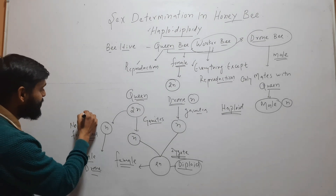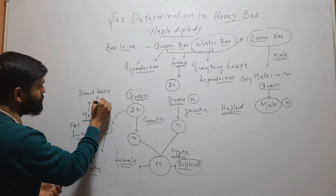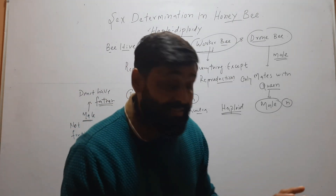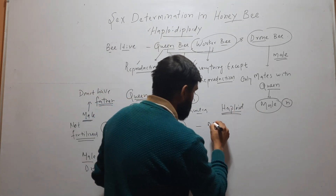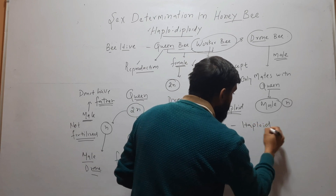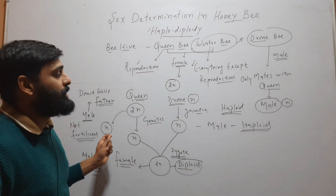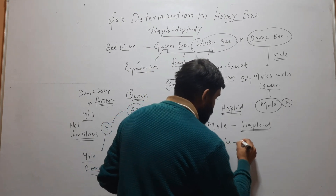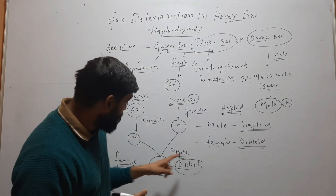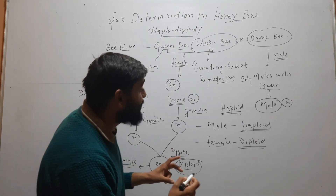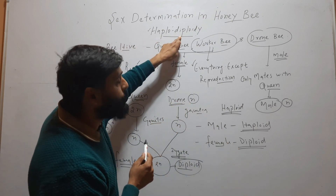Here you can see that this male does not have a father. That's why this type of sex determination is called haplodiploidy — because here the male is haploid and is produced from unfertilized female gametes, while the female is diploid and is produced from the fusion and fertilization of male and female gametes. Haploidy is male and diploidy is female.